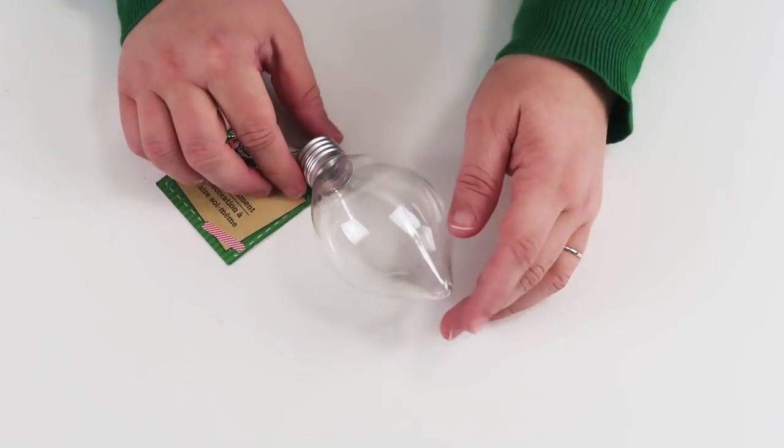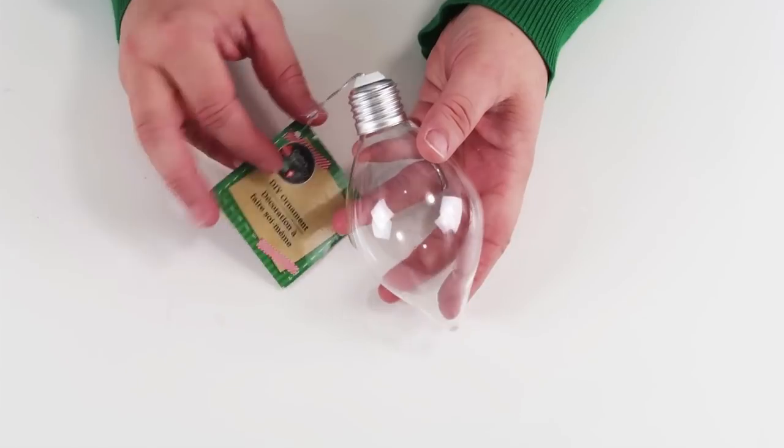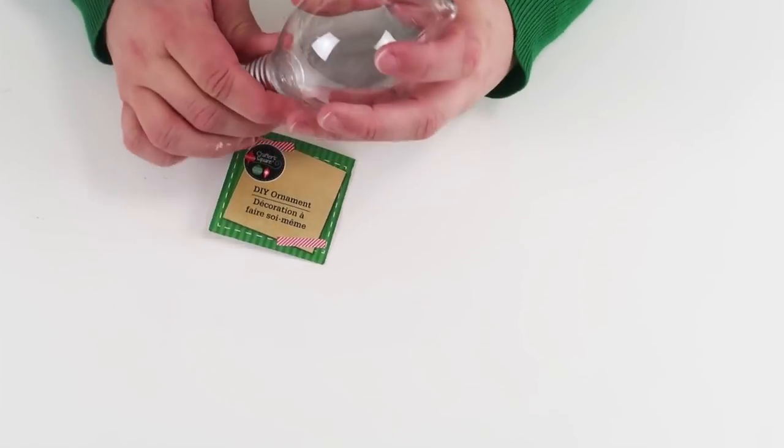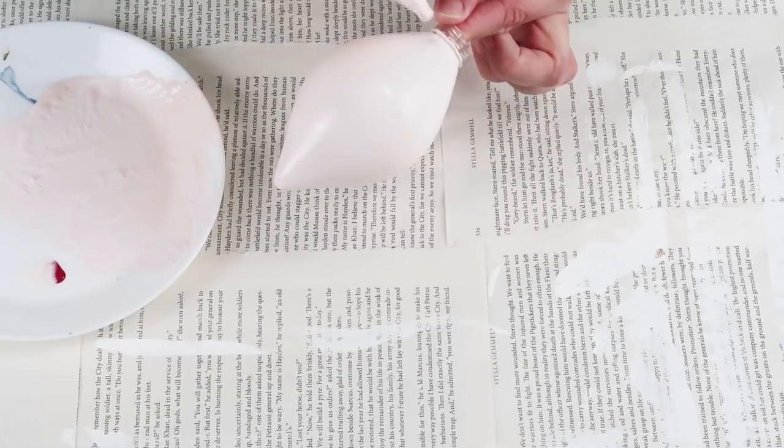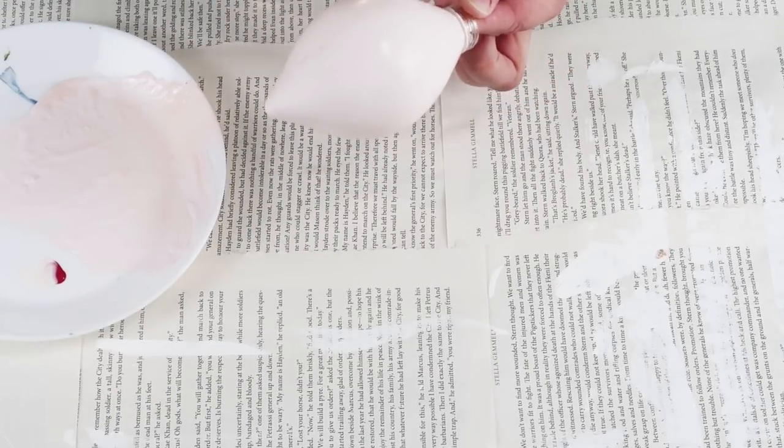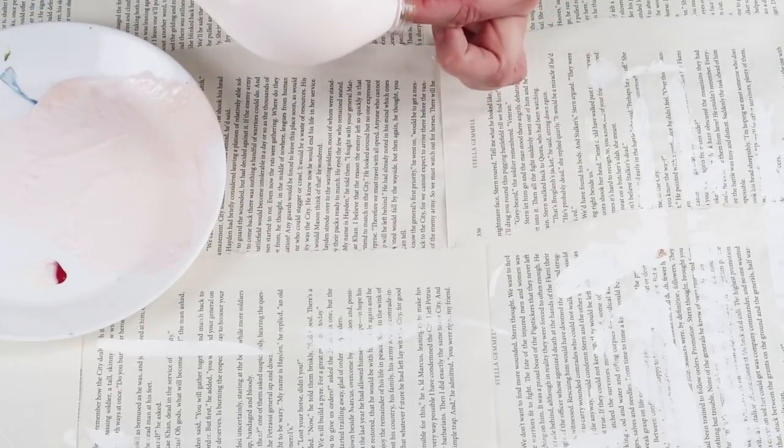This DIY is so whimsical and simple to make. We're going to start with this ornament from the Dollar Tree. It is shaped like a Christmas light and we are going to start with painting it a peachy tan type color. This is going to be the face for Santa.